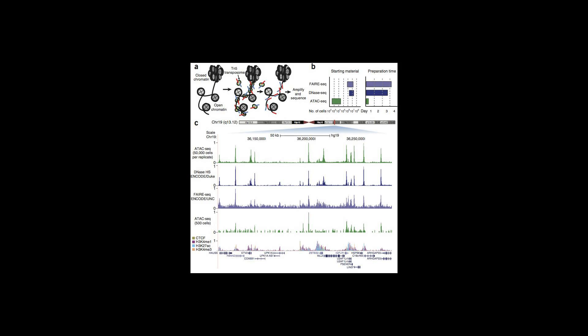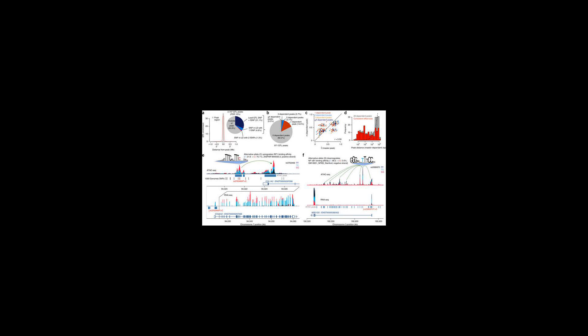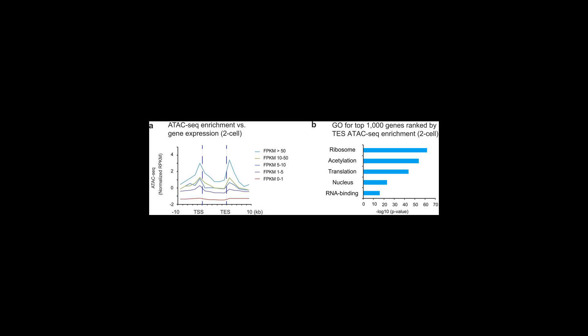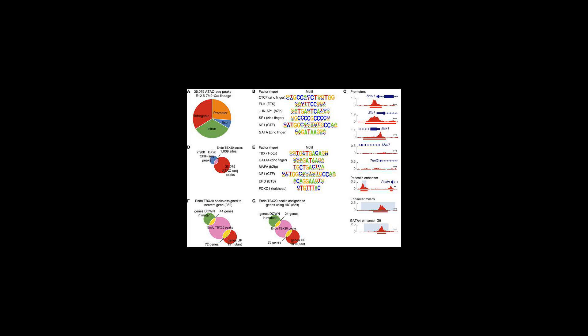An ATAC-SEQ experiment will typically produce millions of next-generation sequencing reads that can be successfully mapped on the reference genome. After elimination of duplicates, each sequencing read points to a position on the genome where one transposition or cutting event took place during the experiment.